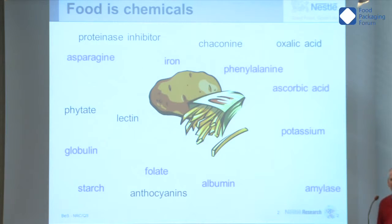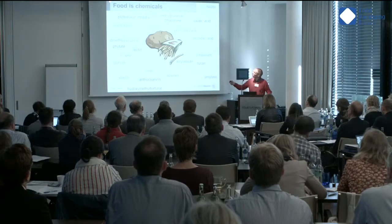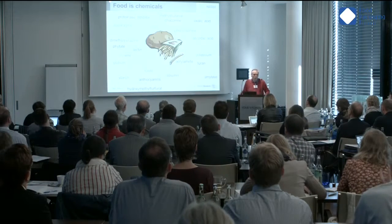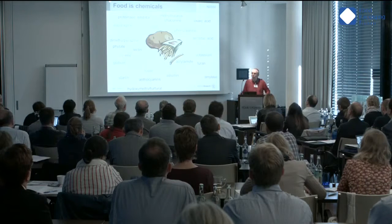Some of them are really not so good. I would take the example of chaconine — the glycoalkaloids, chaconine and solanine — which have caused death in human beings from people consuming green potatoes. So just to say that it's quite complex chemistry. And if you look at the protein inhibitors, this will inhibit digestion of protein. And how do we deal with that?